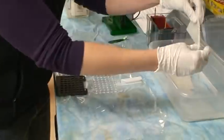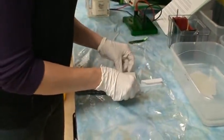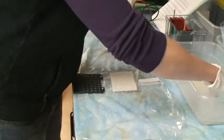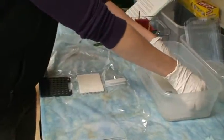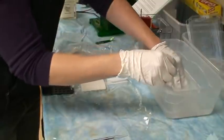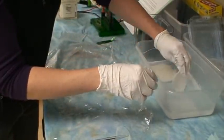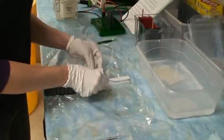You start with a sponge. Lay it down. Then you need one of your pieces of filter paper. Mine is sticking to my gel. There we go. Piece of filter paper, lay that down.